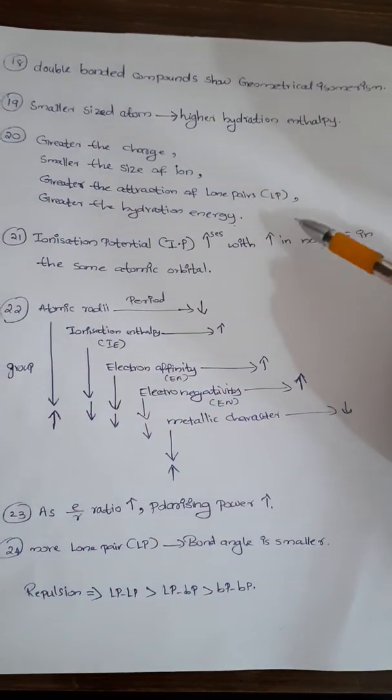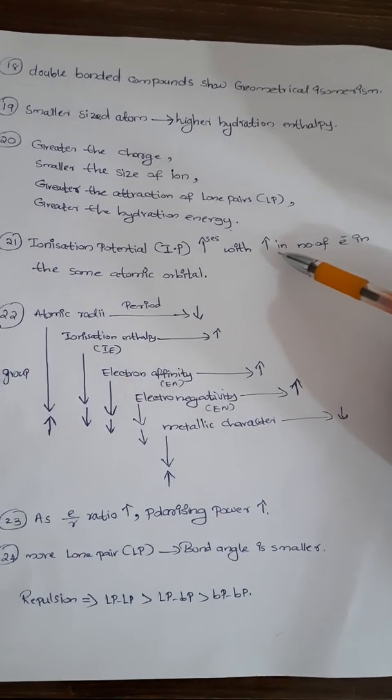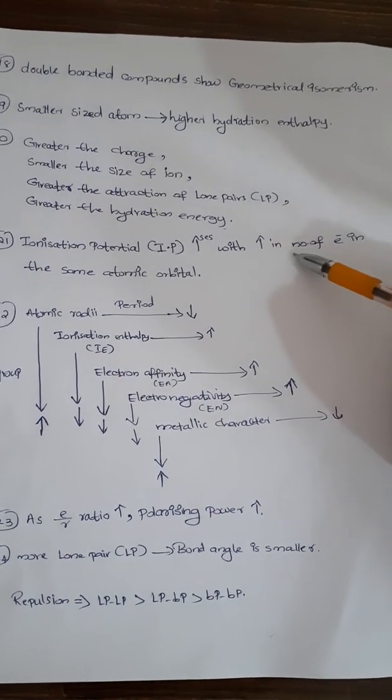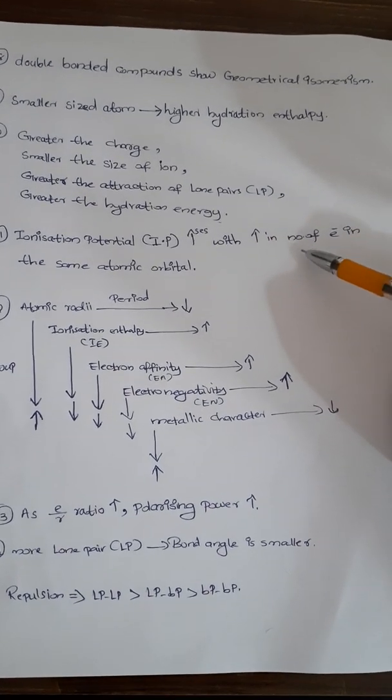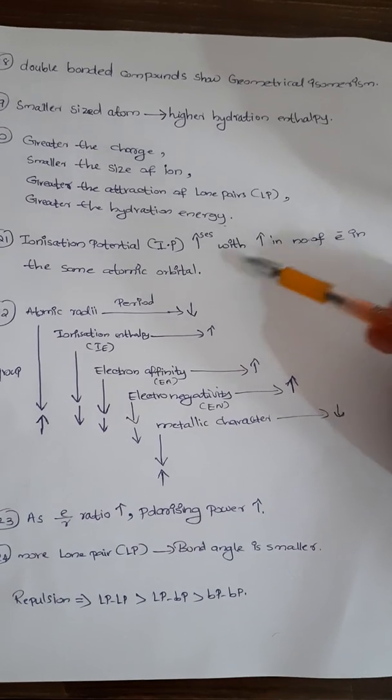Next point: ionization potential increases with the increase in number of electrons in the same atomic orbital.